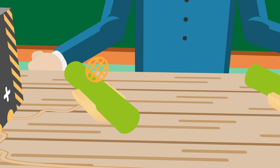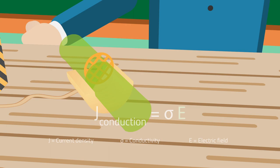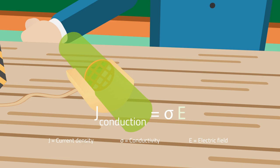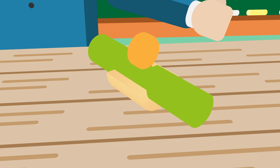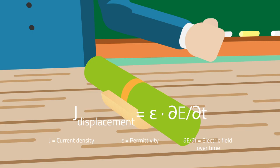Maxwell reasoned that this was not the case and he introduced a displacement current. The electric field E and the electric flux D are both vectors and for the current in a conductor we can write J equals sigma E. The displacement current can be written as J displacement is dD by dT.